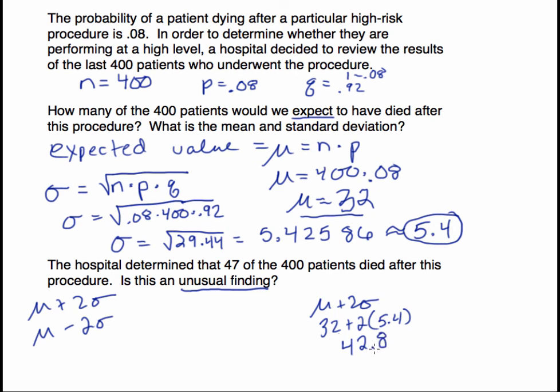We could stop right there, but we might as well figure out the lower bound. So the mean here, 32 minus 2 times 5.4. Subtracting two standard deviations - 2 times 5.4, you get 21.2. So our usual range of values is 21.2 all the way up to 42.8.